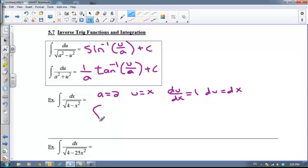So this turns into the integral of du over the square root of a squared, because 2 squared is 4, minus u squared, because x squared is x. And we have that exact formula there. So my answer is the arc sine of u over a. And my u was x, and my a was 2, and then plus c.